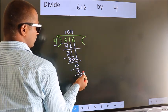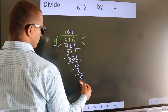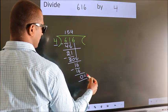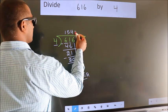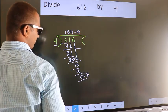No more numbers to bring it down. So we stop here. This is our remainder. This is our quotient.